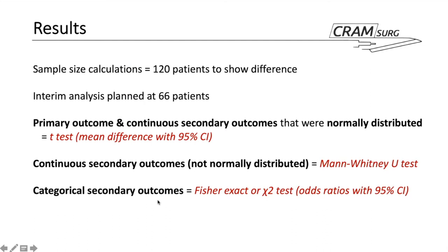The sample size calculation required recruiting 120 patients to show a significant difference, with interim analysis planned at 66. A t-test was used for continuous primary and secondary outcomes. For continuous secondary outcomes that were not normally distributed, the Mann-Whitney U test was used. Fisher's exact test was used for categorical secondary outcomes where cell counts were less than five, and the chi-square test was used where counts were above five.